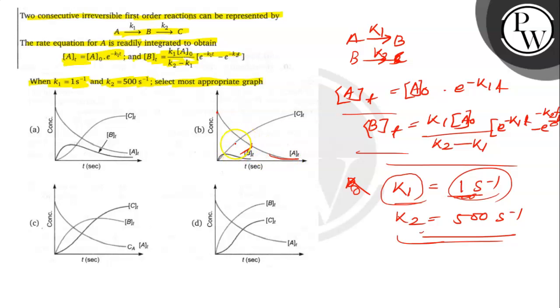Here by increasing time, concentration also increases—that is CT and AT. This is the line for BT. This is the line for AT and this is the line for CT.